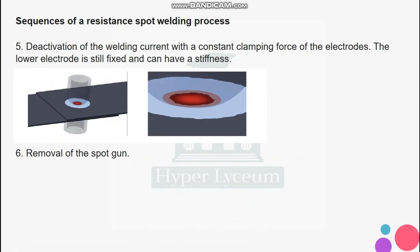Five, activation of the welding current with constant clamping force of the electrodes — the lower electrode is still fixed and can have a stiffness. Six, removal of the spot gun.